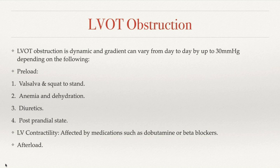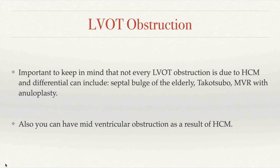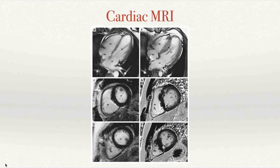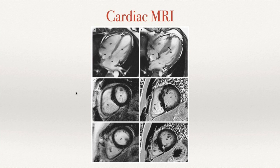LVOT obstruction has a differential beyond HCM, including sigmoid septum of the elderly, Takotsubo — since you have a hyperdynamic base — and status post MVR with annuloplasty. You can also have mid-ventricular obstruction or obstruction at the apex. If there is difficulty obtaining echo windows, cardiac MRI is a great test to evaluate for HCM — it can identify septal hypertrophy and also evaluate for fibrosis, which is an early sign seen in HCM, shown with late gadolinium enhancement.